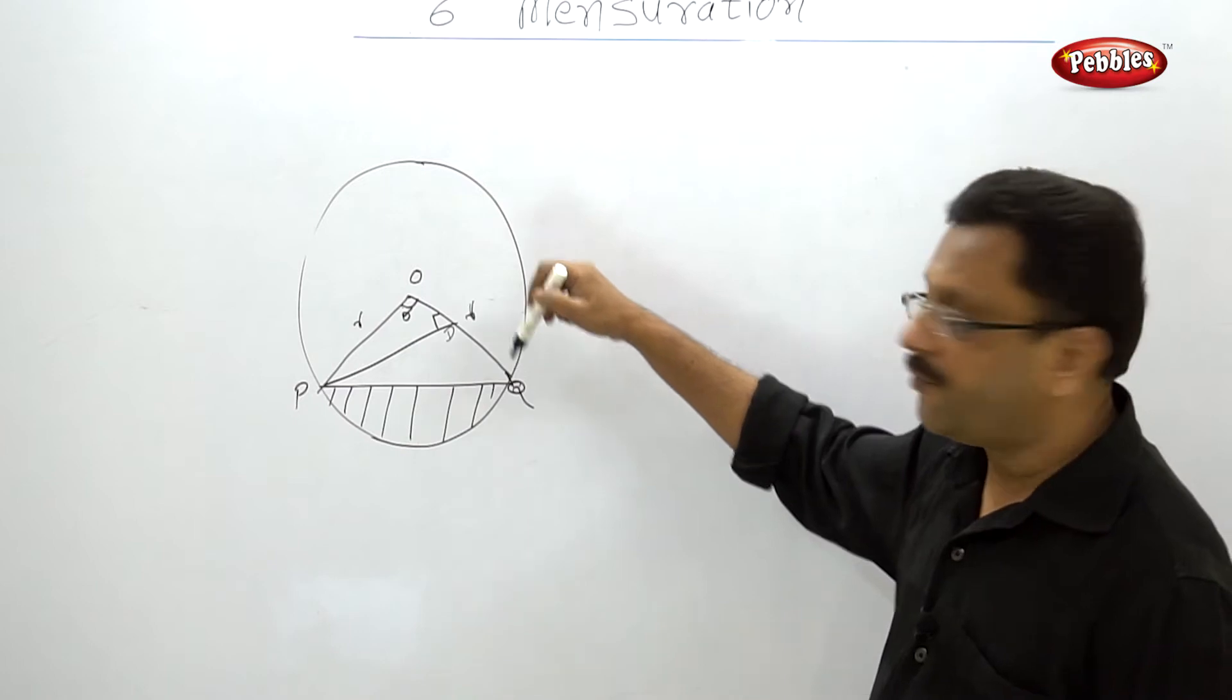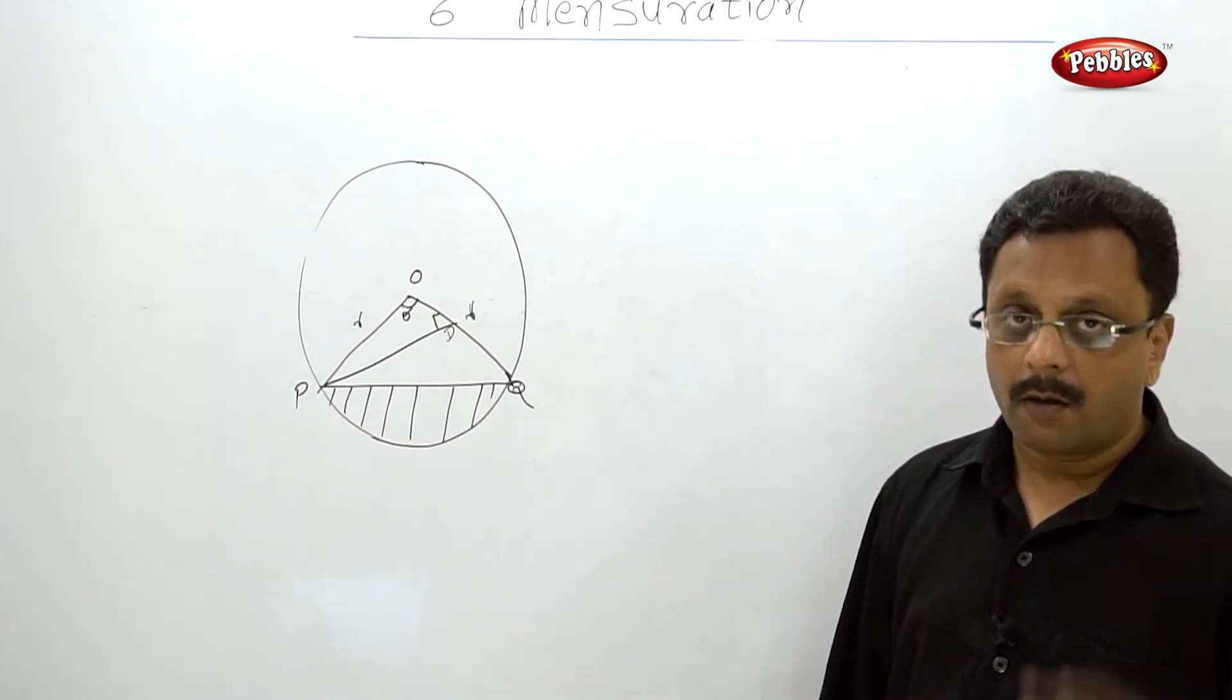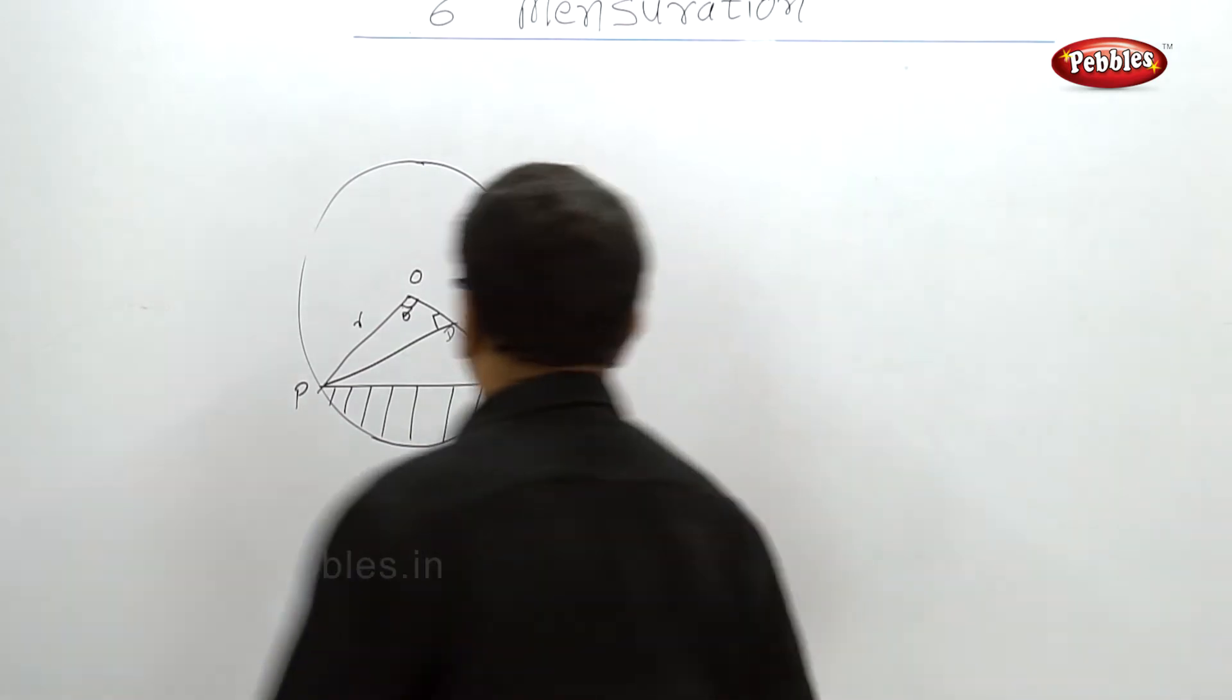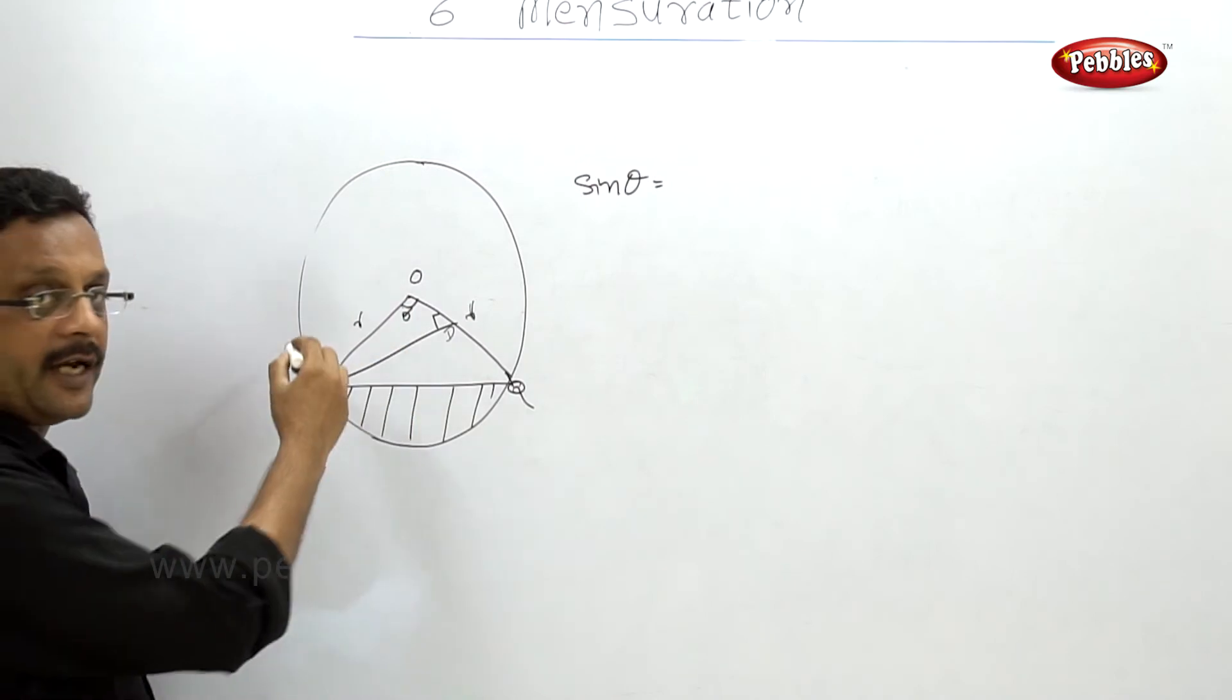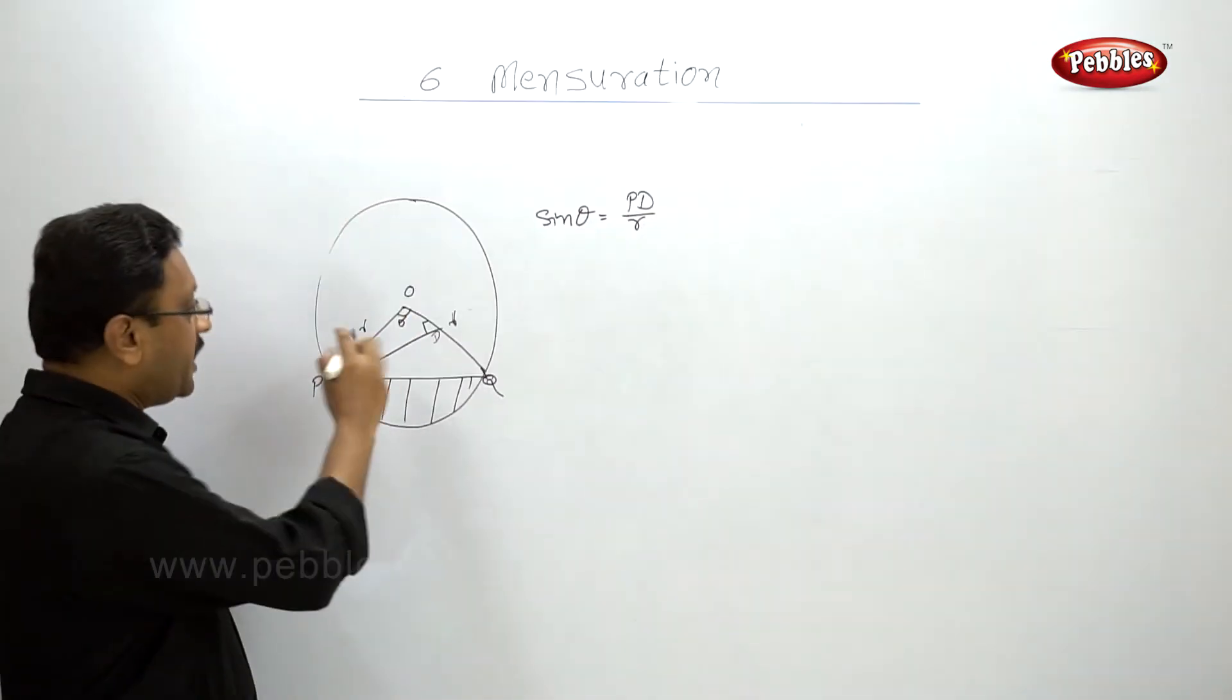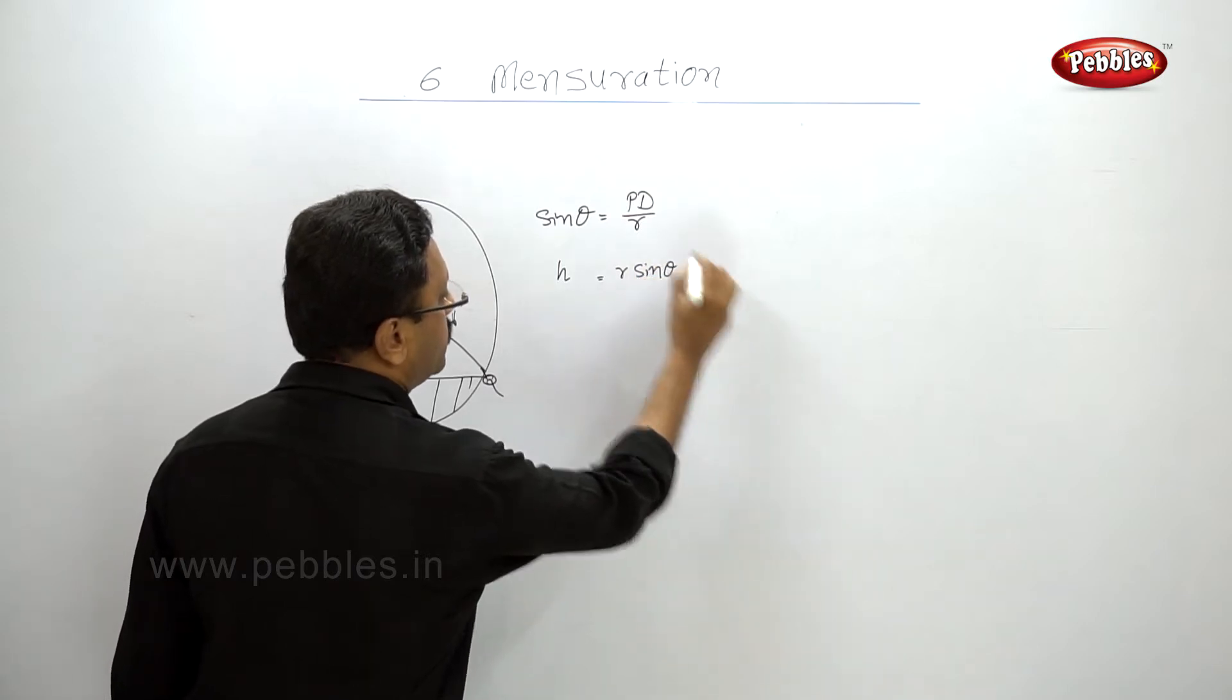Half base into height PD, but this PD is unknown, we don't know this. But you know this angle and when this is a right angle, this is a right angle triangle. The sine theta is equal to opposite side upon hypotenuse, that is PD upon R. So this PD is nothing but the height, so my height is equal to R sine theta.